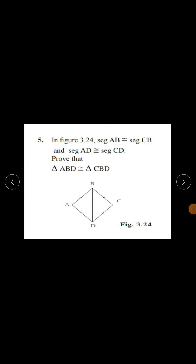Question number 5 from practice set 3.2. In figure 3.24, seg AB is congruent to seg CB and seg AD is congruent to seg CD. Prove that triangle ABD is congruent to triangle CBD.